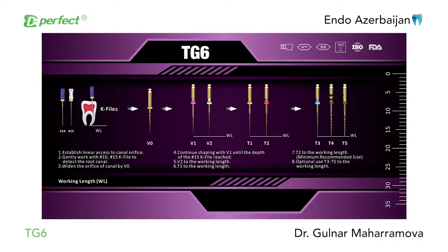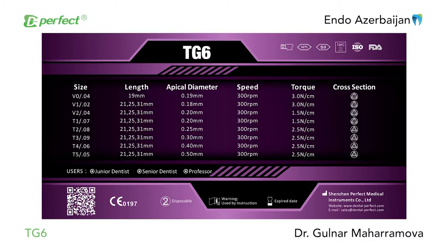In this video, I'll walk you through a case where I use TG6 files by Perfect Endo. The file system is made of an advanced modern metallurgy, which allows it to be more flexible and more resistant to cycling fatigue. There are two types of files according to their function: V-type is for shaping and T-type is for finishing the shaping. The system has a triangle cross-section. The files are to be used at 300 rpm and at a torque between 1.5 to 3 N·cm.